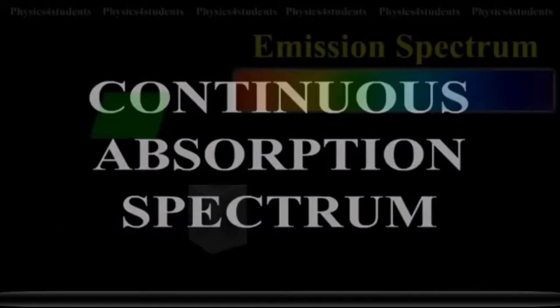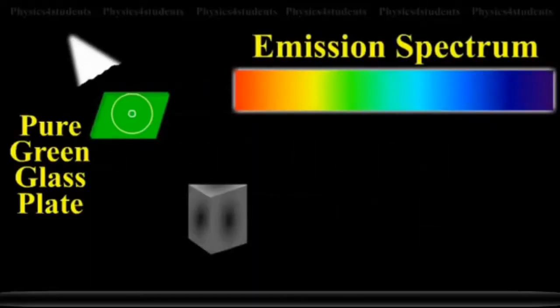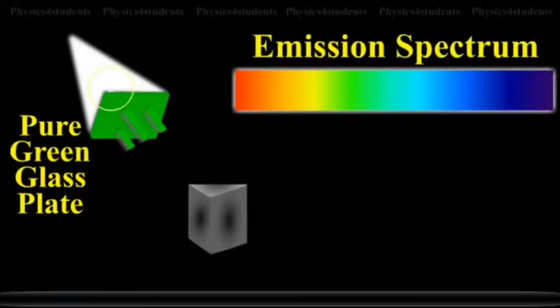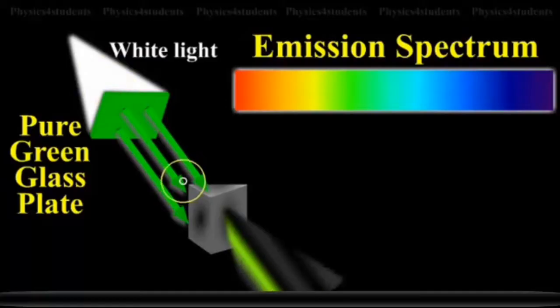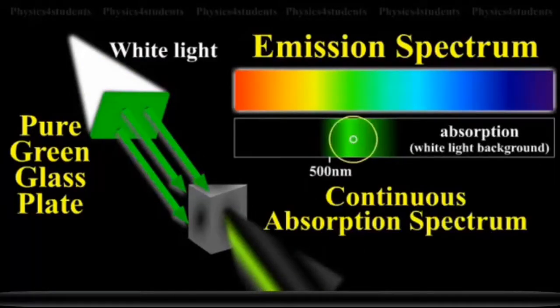Continuous absorption spectrum. A pure green glass plate, when placed in the path of white light, absorbs everything except green and gives continuous absorption spectrum.